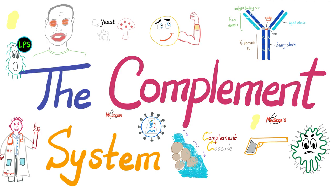We will now review two very important topics quickly: the complement system and tissue plasminogen activator, which is a fibrinolysin. For a more detailed discussion, check out my complement video in my immunology playlist and my TPA video in my bleeding and coagulation playlist. Let's start with the complement system. Why do you call it complement? Because it complements the ability of your antibodies to perform their function.